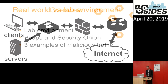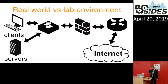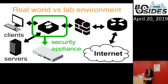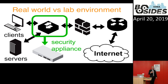This is a simplified diagram of a real-world environment where you've got clients and servers talking to each other through switches and routers before you get to the firewall, which is routed to the Internet. Usually, before the firewall, you have a security appliance that is detecting anything malicious going on in the network. Depending on the type of appliance, it could be just monitoring, or it could be some sort of intrusion protection system.